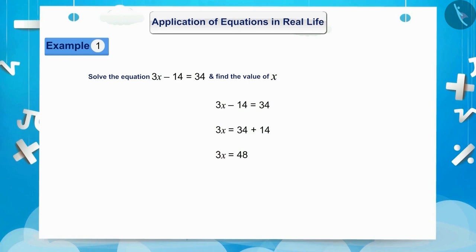In the LHS, 3 is getting multiplied by x. So, in the RHS, 48 will be divided by 3. Therefore, x is equal to 48 divided by 3. 48 divided by 3 is equal to 16. Thus, x is equal to 16.